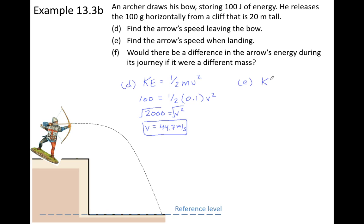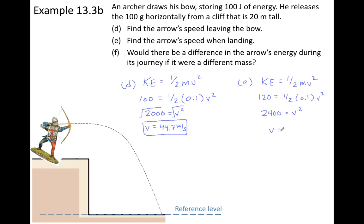Part E is very similar — we use the kinetic energy and speed equation again, but now we're finding speed when the arrow lands. The kinetic energy increased from 100 to 120 joules, so we expect a greater speed. Simplifying the equation gives speed² = 2400. Taking the square root gives approximately 49 meters per second.